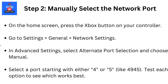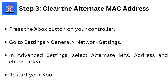Test each option to see which works best. Go back to the home screen, then restart your Xbox. Step 3: Clear the alternate MAC address. Press the Xbox button on your controller. Go to Settings, then General, then Network Settings. In Advanced Settings, select Alternate MAC Address and choose Clear. Restart your Xbox.